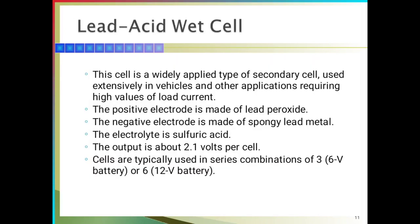This is the secondary cell. The secondary cell example is the lead acid battery. It is extensively used in vehicles and other applications requiring high values of load current. The positive electrode is made up of lead peroxide. The negative electrode is made up of spongy lead metal. The electrolyte is sulfuric acid. The output is 2.1 volts per cell. Cells are typically used in series combinations of 3 to 6, producing 6 to 12 volt batteries.